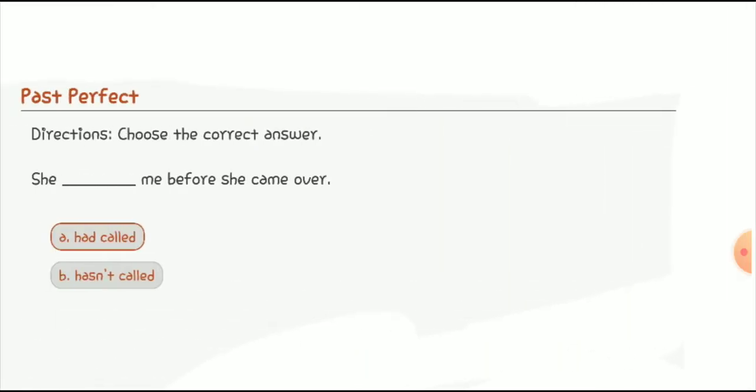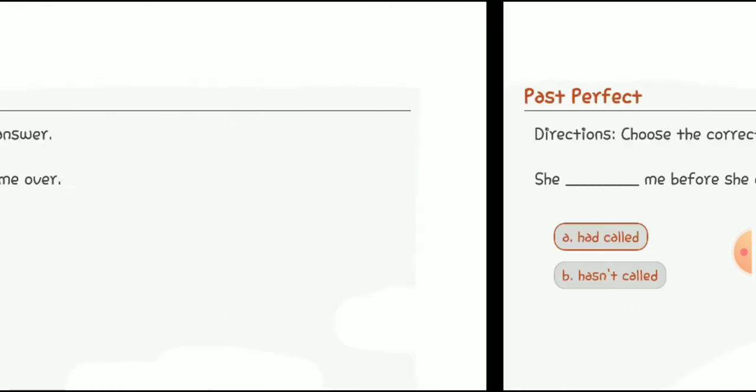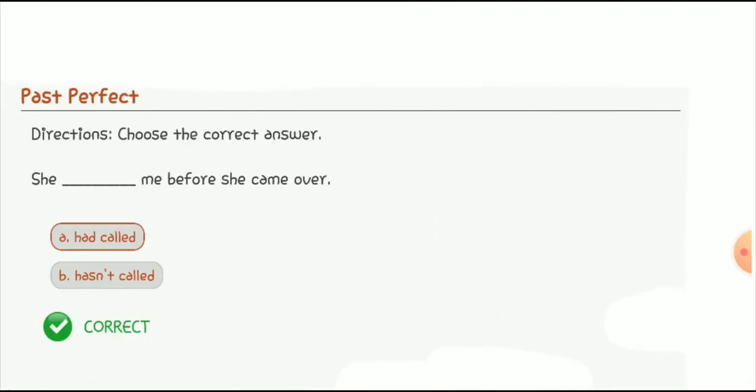Quiz number two: 'She ___ me before she came over.' The options are 'she had called' or 'she has not called.' We will use 'had' because 'had' is used for the past perfect tense, plus 'called' — the third form of verb. So 'had called' is the correct option.